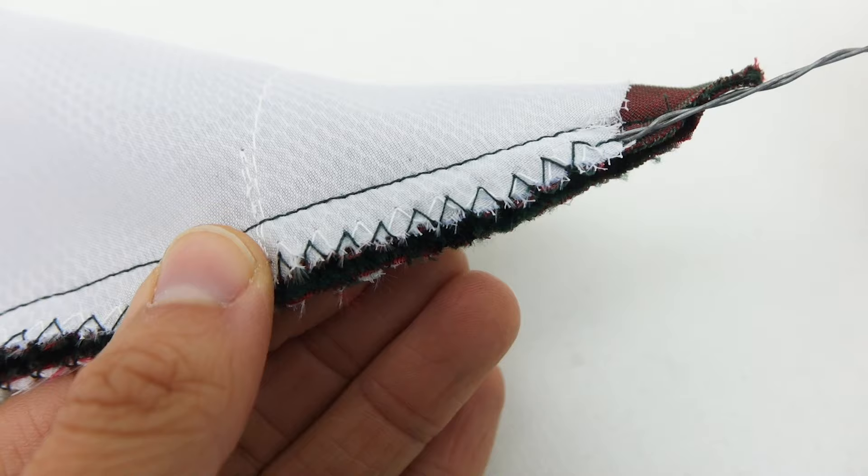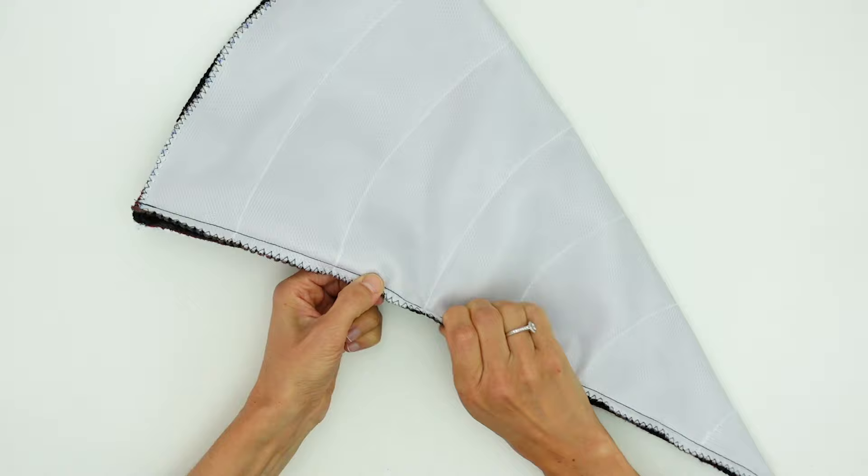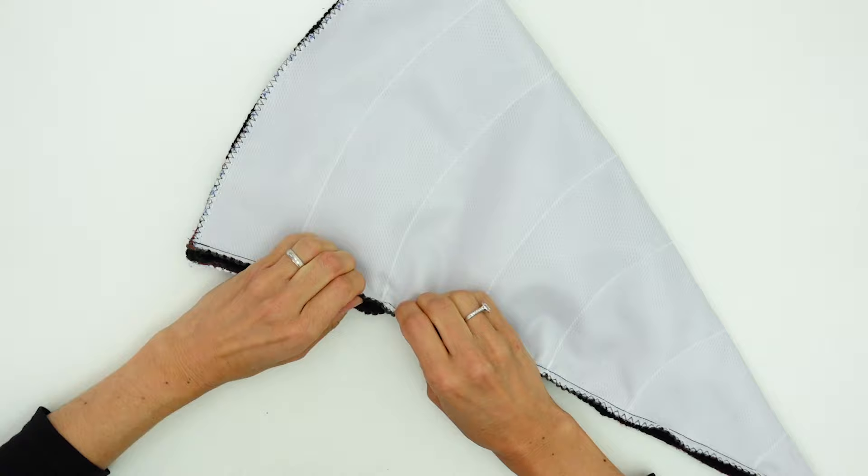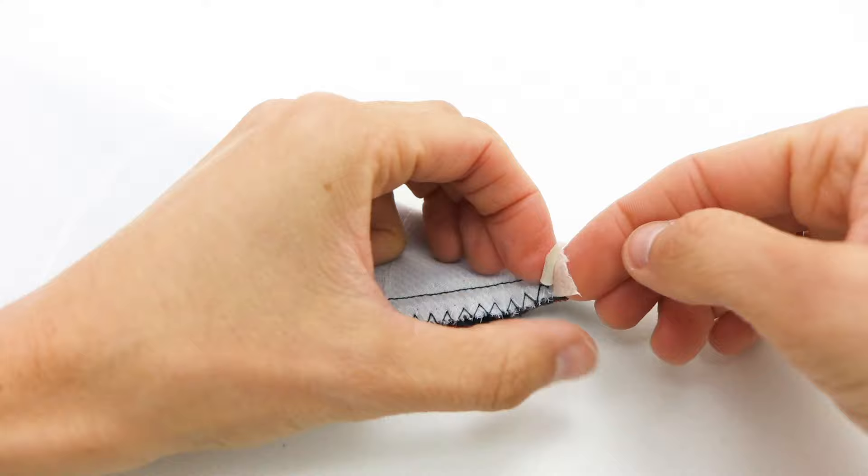If you used fusible instead of a sew-on interfacing, you won't have this little tunnel but I'll explain in a minute when and where it's possible to add it. Also don't forget to protect your fabric from the sharp edge of the wire.